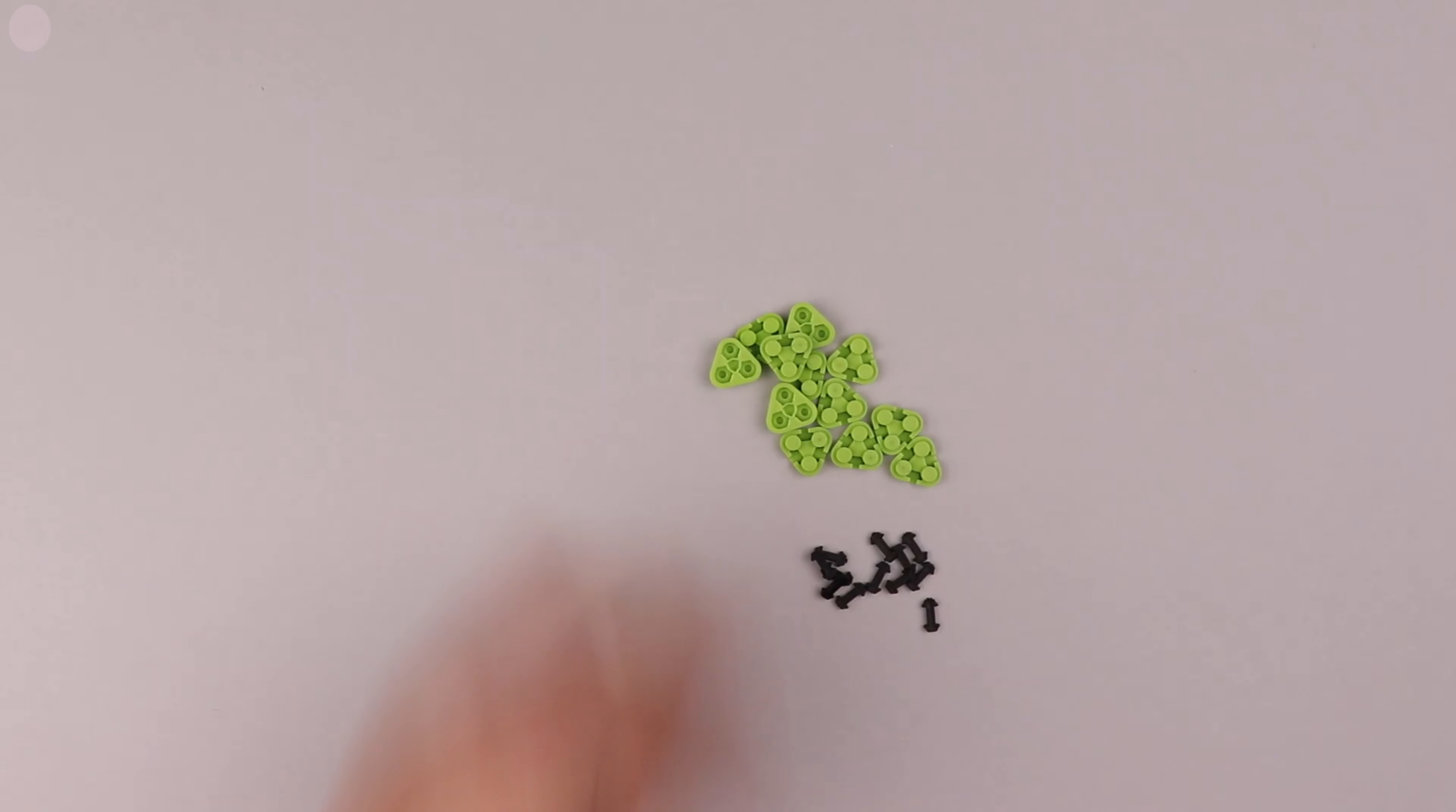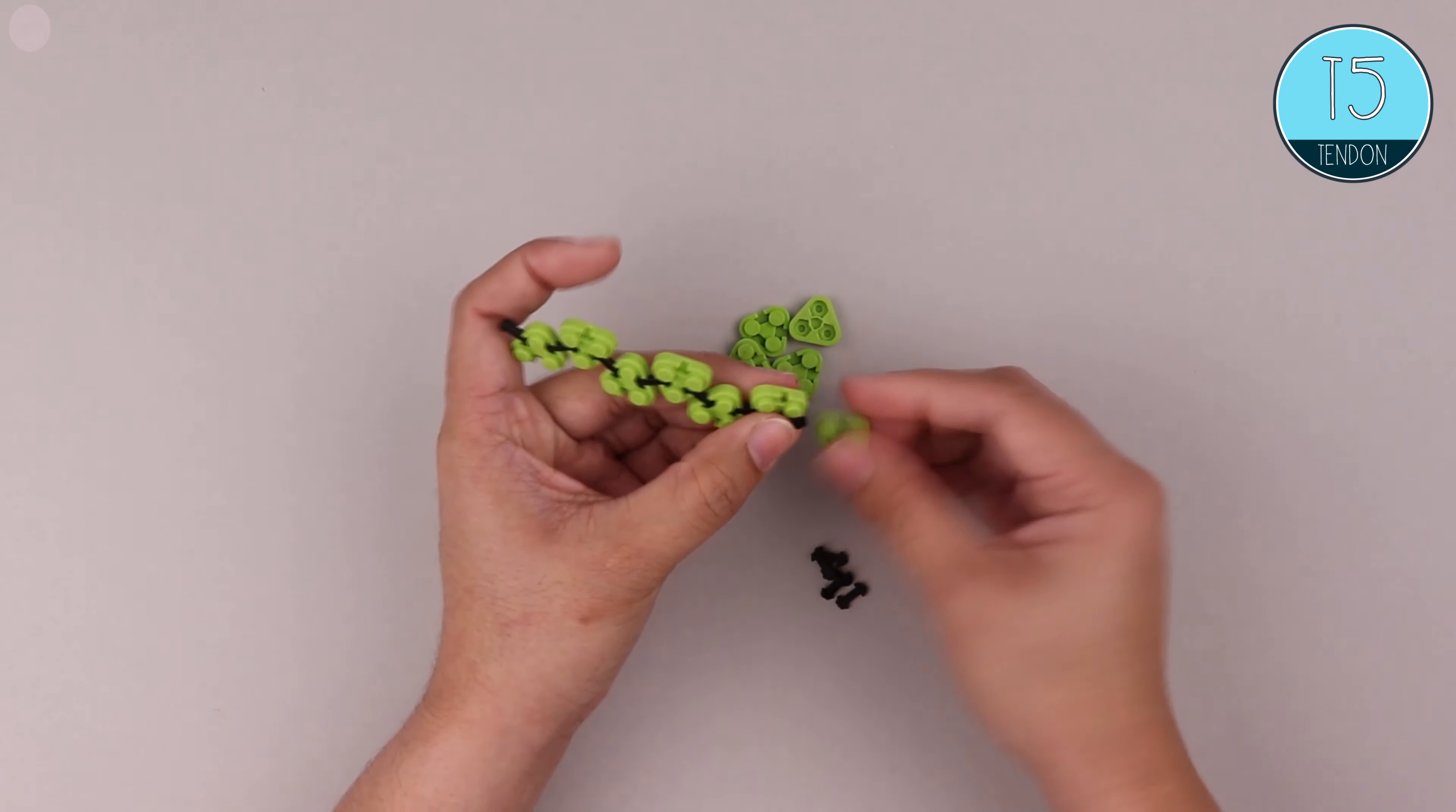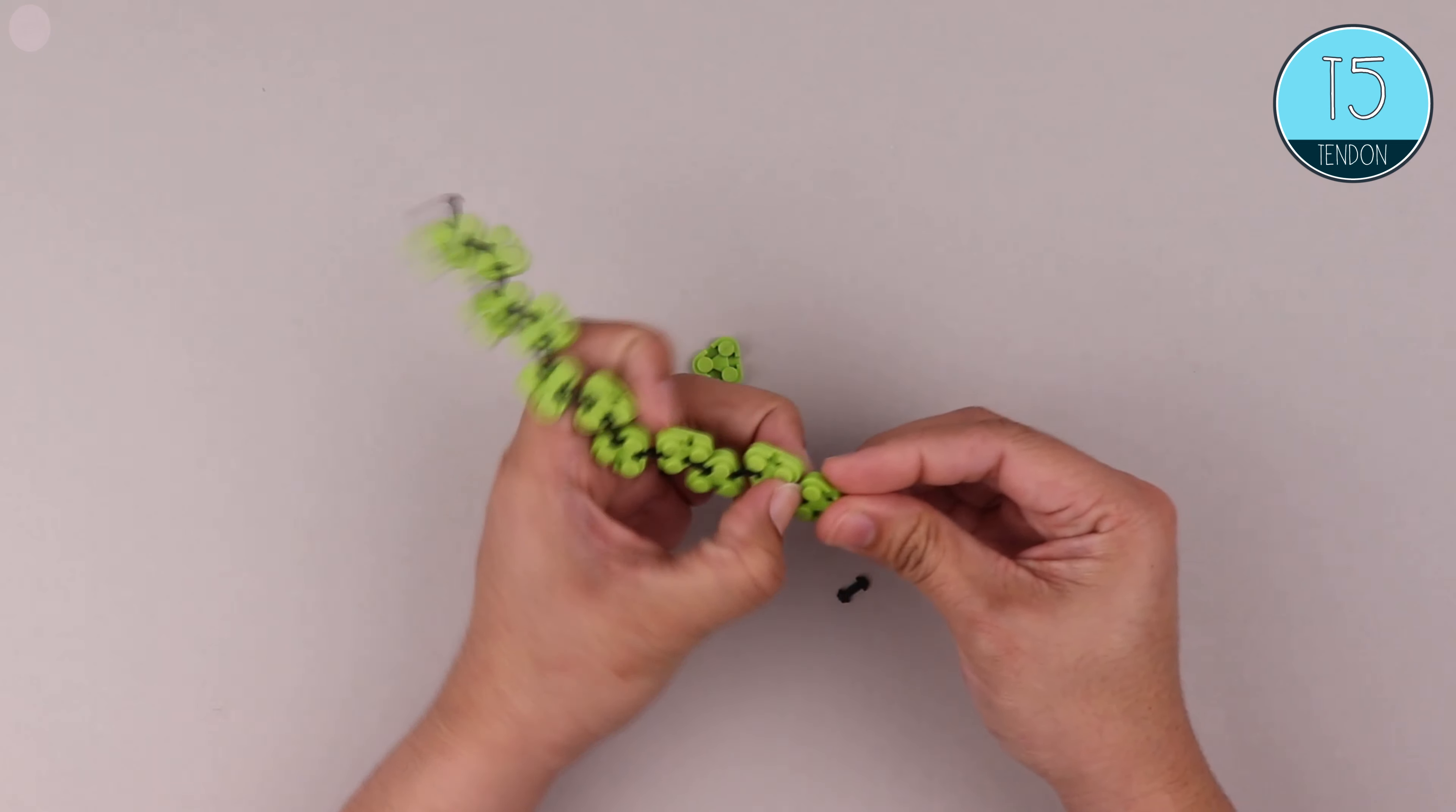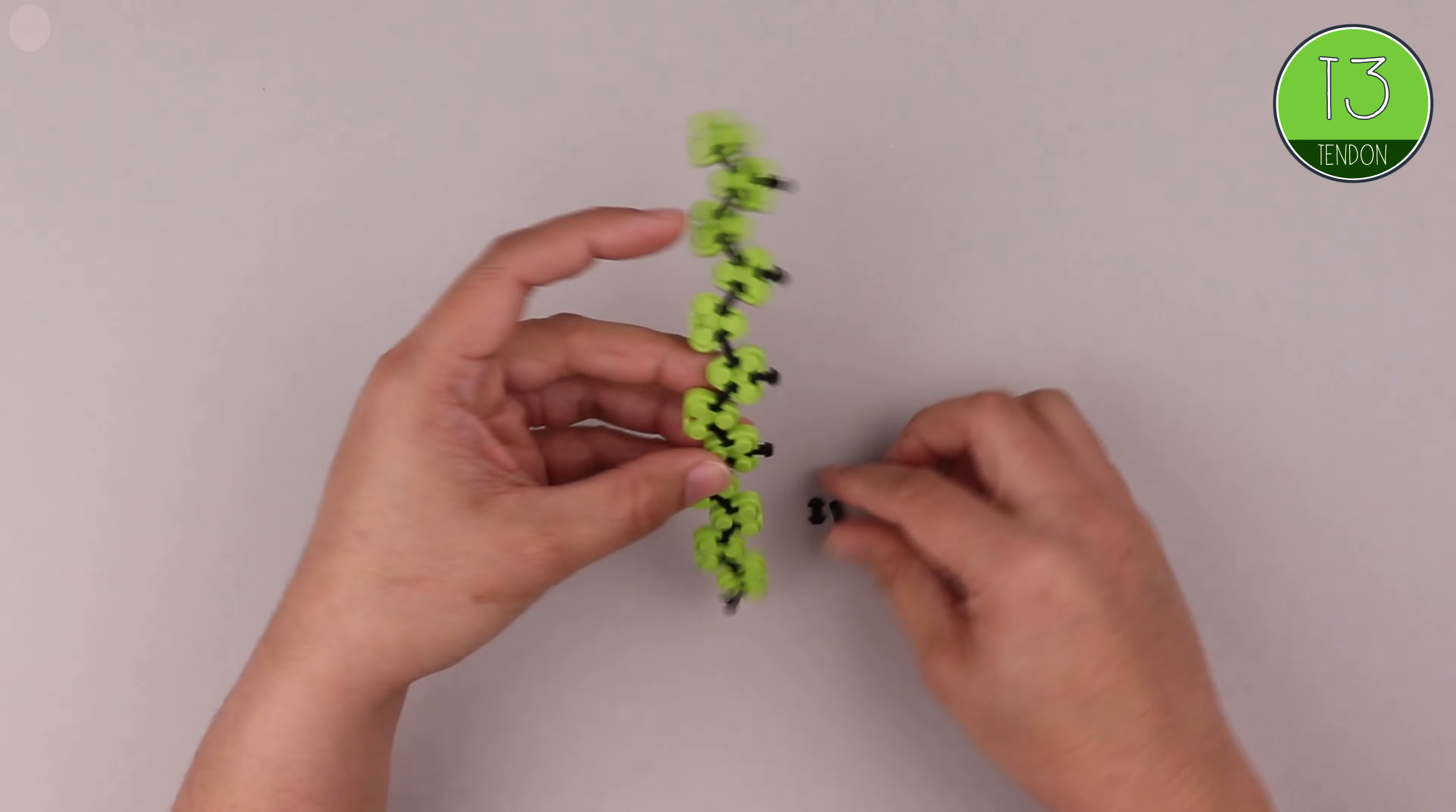So now we'll continue by building the rest of Octo's head, including his face. And to do this, we begin by making a strand of green triangles. Now, you may need to pause the video here and catch up and that's perfectly fine.